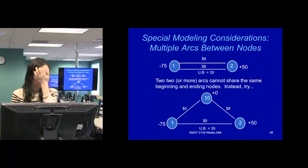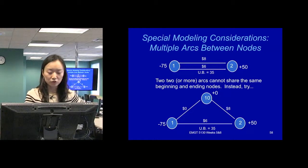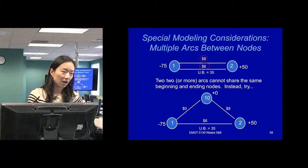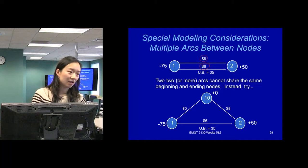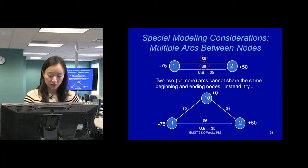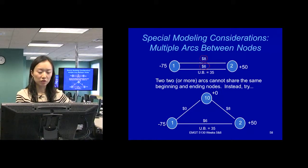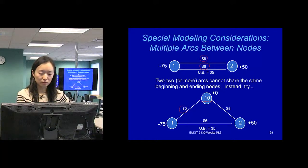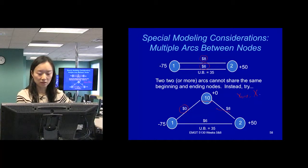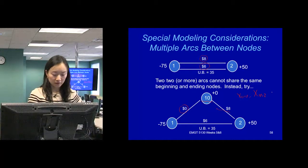That's one example. And the other example is more simple. For example, there are two different ways to go between node 1 and 2, and they have different costs. You can go on a freeway or you can go through a doorway, and both ways have a different capacity. To differentiate the two different arcs, one way to do it is to add another intermediate node W here, set this cost to be 0 and put the $8 cost here. So instead you will have x1,10 and x10,2 to represent this upper arc.